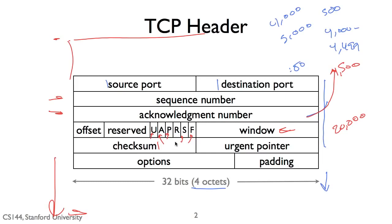The final control bit is R, the reset bit, which says we need to reset this connection — something has gone wrong.